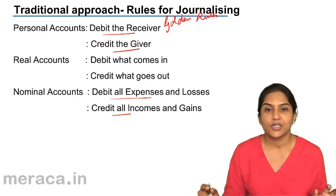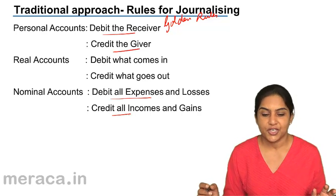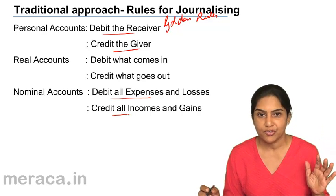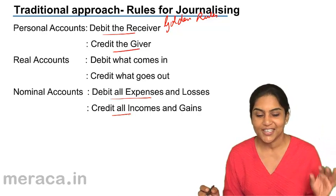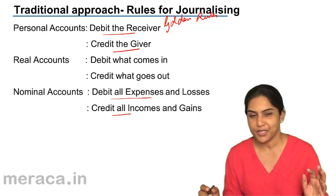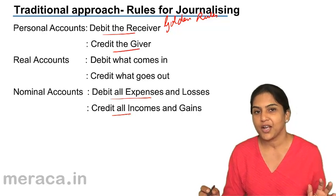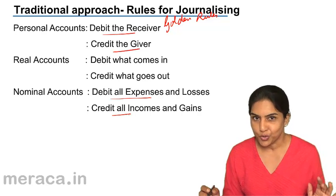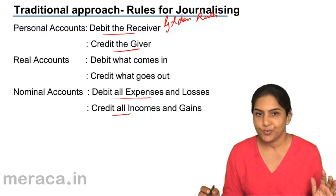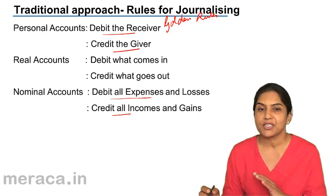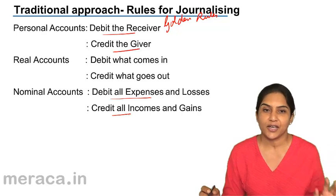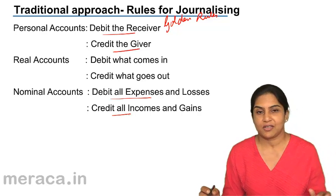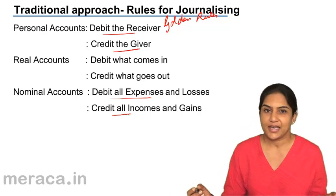These are the golden rules of journalizing. Please do not forget — you are expected to remember this. For personal accounts: debit the receiver, credit the giver. For real accounts: debit what comes in, credit what goes out. For nominal accounts: debit all expenses and losses, credit all incomes and gains.